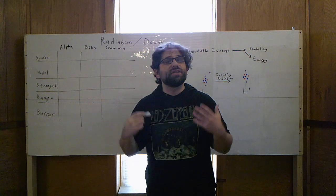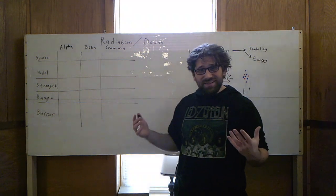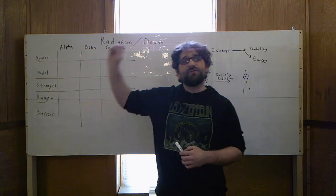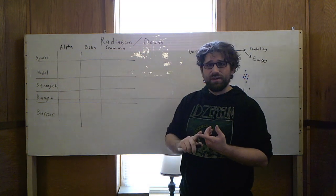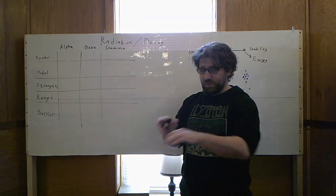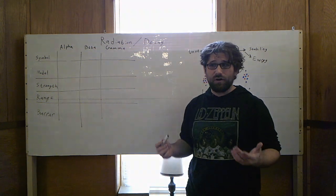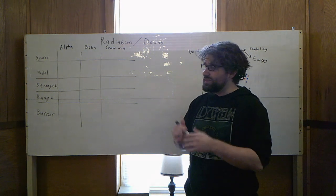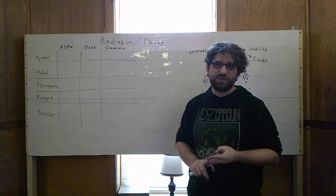Radiation is actually extremely common. Light is an example of radiation — it's radiation being emanated from the sun. Infrared is radiation. Ultraviolet radiation is what tans our skin. Radiowaves are electromagnetic radiation. It's the thing that we use in Wi-Fi, cell phone towers, and Bluetooth signals.